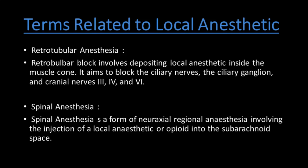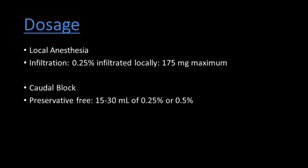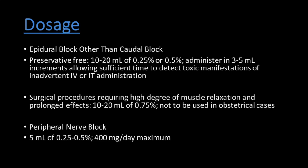Spinal anesthesia is a form of neuraxial regional anesthesia involving injection of a local anesthetic or opiate into the subarachnoid space. Dosage: local anesthesia infiltration — 0.25%, maximum dose 175 mg. Caudal block: preservative-free, 25 to 30 ml of 0.25% or 0.5%. Epidural block: 10 to 20 ml of 0.25% to 0.5%, administered in 3 to 5 ml increments, allowing sufficient time to detect toxic manifestations.